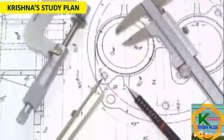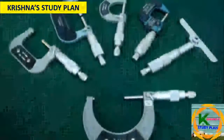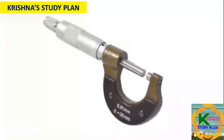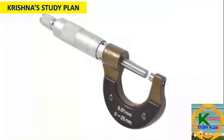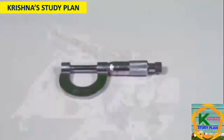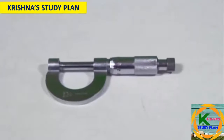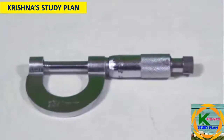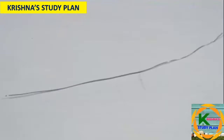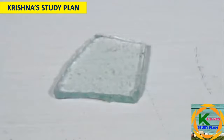Engineering and Machining. The micrometer used with a telescope was invented by William Gascoigne, an English astronomer. Now let's find out how we can use this instrument to find the volume of wire and an irregular laminar, along with the thickness of a glass plate and a sheet of paper.